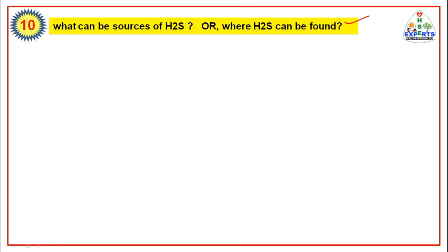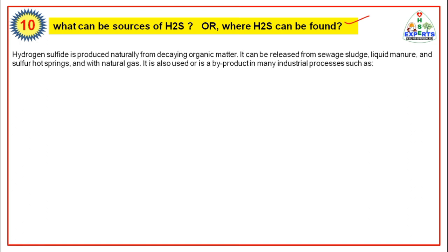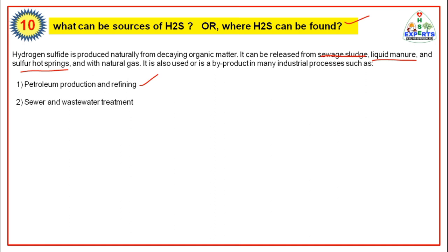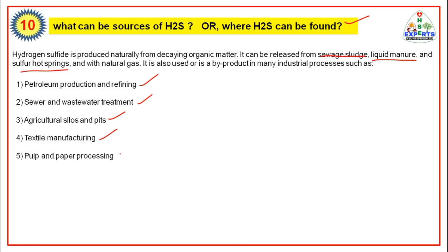The tenth question: What can be a source of H2S? Where can H2S be found? Hydrogen sulphide is produced naturally from decaying organic matter. It can be released from sewage sludge, liquid manure, surface hot springs, and natural gas. It is also used or is a byproduct in many industrial processes such as petroleum production and refining, sewer and wastewater treatment, agricultural silos and pits, textile manufacturing, pulp and paper processing, food processing, hot asphalt paving, and mining.